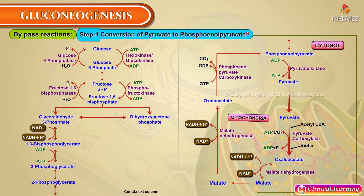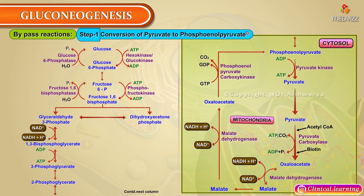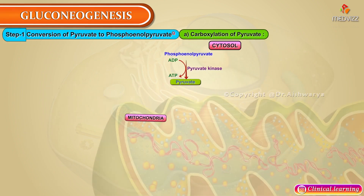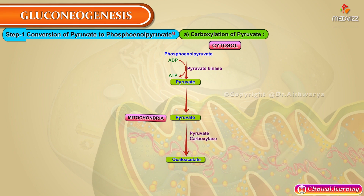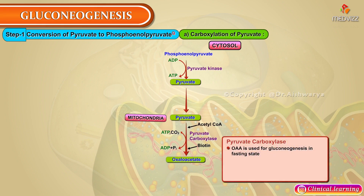Bypass reaction 1: conversion of pyruvate to phosphoenolpyruvate (PEP). This occurs through two reactions. First, carboxylation of pyruvate — pyruvate enters the mitochondria and is converted into oxaloacetate by pyruvate carboxylase. Pyruvate carboxylase is a mitochondrial enzyme, so this reaction occurs only in the mitochondria. It requires biotin and ATP.